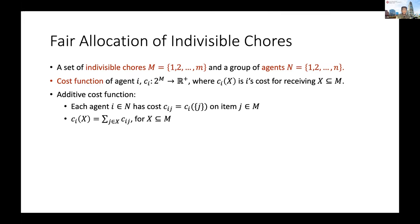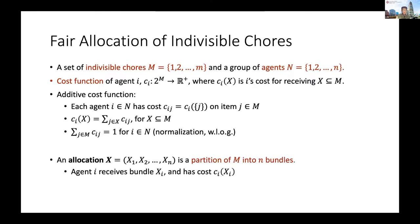In this work, we assume the cost functions are additive, which means that for every agent i, she has a value ci for each item g. For a bundle of items, agent i's cost is the summation of each individual item's cost in the bundle. We further assume the cost functions are normalized — without loss of generality — so that for every agent i, her cost for all the items equals one. An allocation of the problem is a partition of all the items, so that every agent i receives bundle xi and has cost ci(xi).